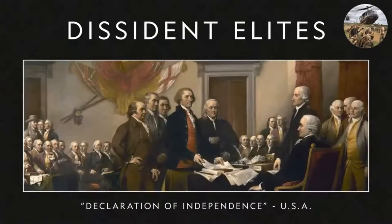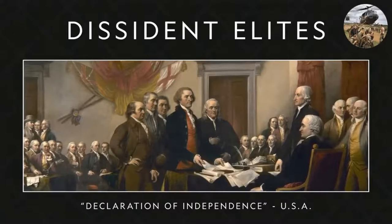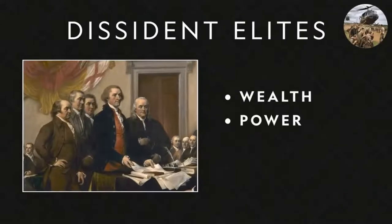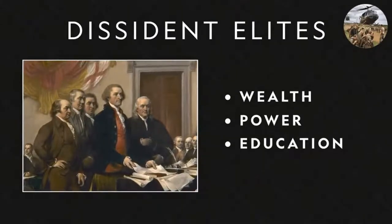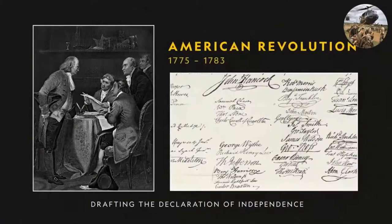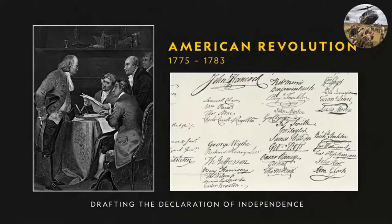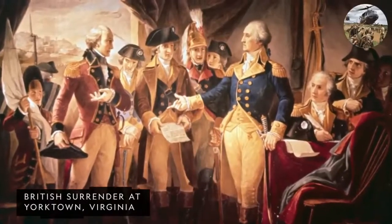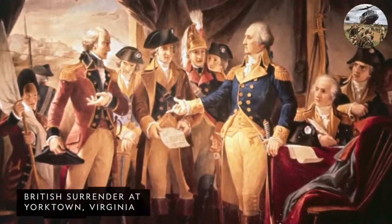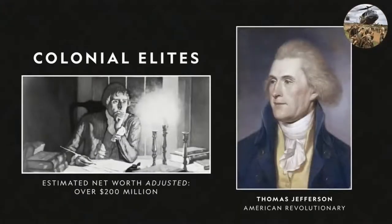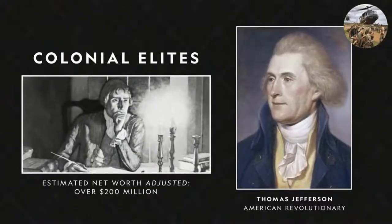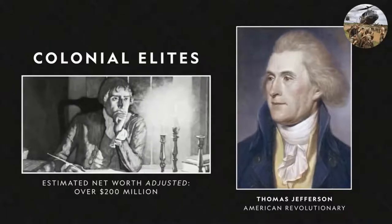Revolutions are often facilitated by a dissident elite — a group comprised of people with wealth, power, or an education who are willing to challenge the existing administration. Elites played a critical role in the American Revolution, one of the earliest revolutions in modern history. American colonists under the rule of Great Britain won a war for their independence in 1783. Colonial elites like Thomas Jefferson, who would later become a United States president, fueled the revolt by contributing their resources toward reform.